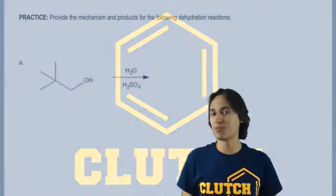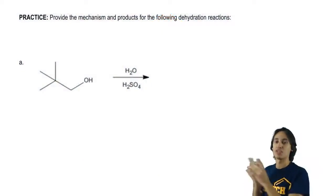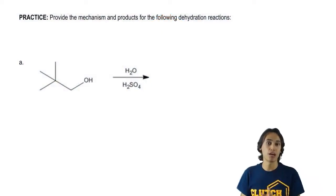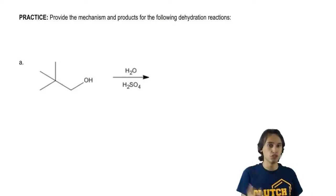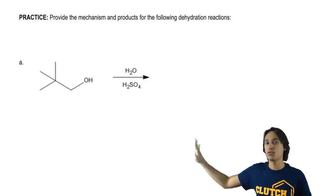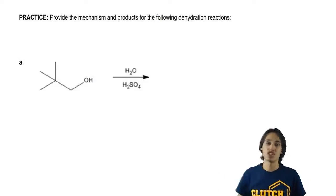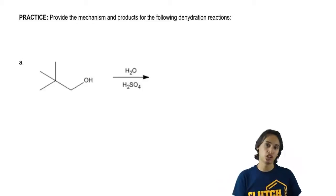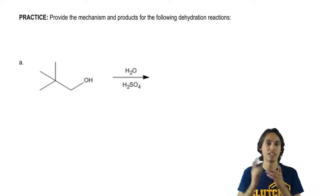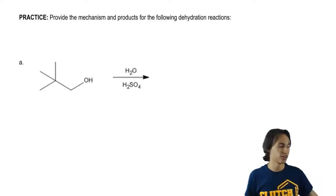You're going to have to use that information to determine the first one. Notice that it is primary. Figure out: this would usually be E2, but if it could shift to a tertiary position, then you should actually use E1. I'll let you guys figure that out.